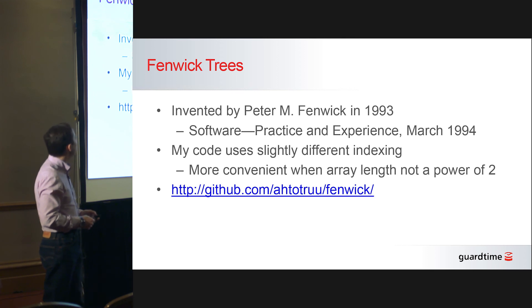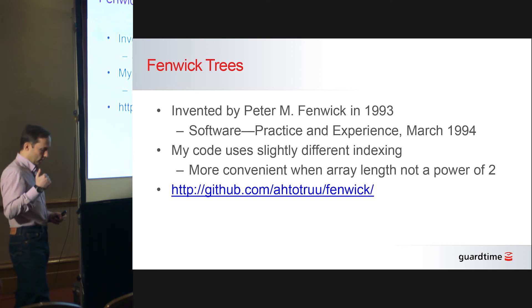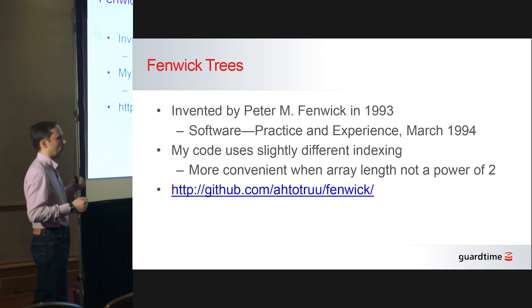If you do go and find Peter's original paper and start reading it, then my code, the code that is out on GitHub, uses a slightly different indexing of elements, because I think my way of indexing works out better if the size of the array is not an even power of 2. Fenwick invented his trees to support arithmetic coding, to support keeping character counts in arithmetic, or symbol counts in arithmetic coding, and his alphabet size was always an even power of 2, so for his purposes he didn't need to worry about people maybe wanting to use an array that is 500 elements long, and not 512.